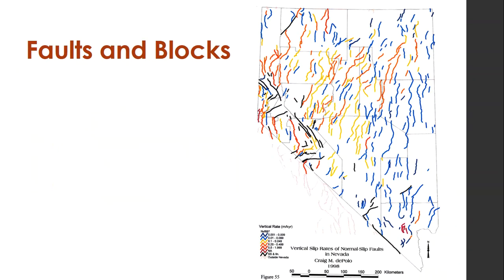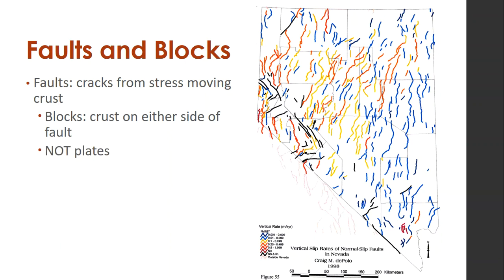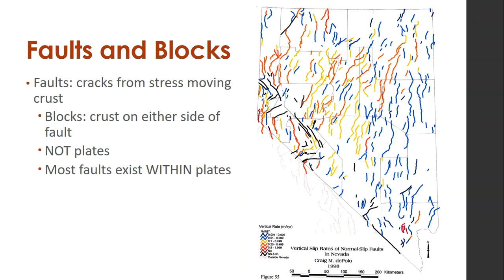So we have something called faults and blocks. Faults are the cracks from the stress of moving crust. The blocks are the crust on either side of that fault. These are not plates — there's no plate boundary in Nevada, but Nevada is feeling the pressure of the plate boundaries to the west of it. Most of these faults exist within plates, and Nevada is full of these faults.